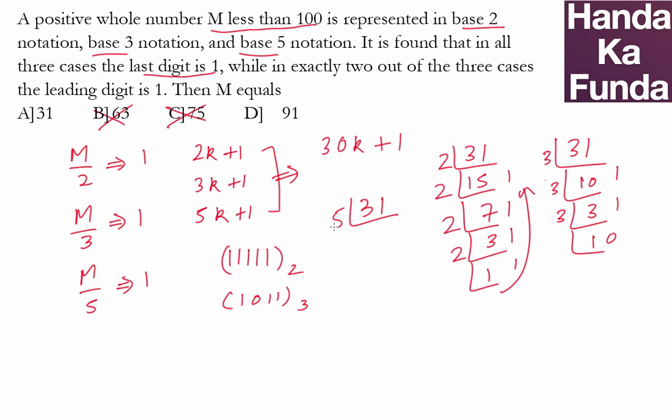And finally, 31 in base 5 is 6 and 1. Again in 5 is 1 and 1. So, what does that give me? It gives me 1, 1, 1 in base 5.